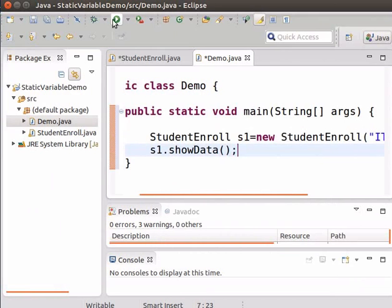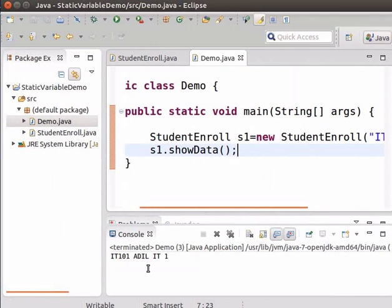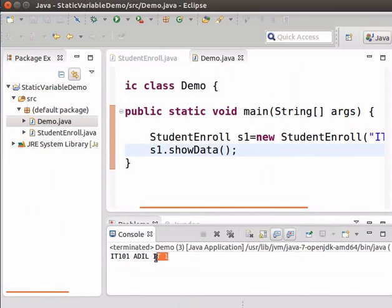Now run the demo program. We can see that the values of the instance variables corresponding to s1 get printed. Also note that the value of the number of student enrollments is 1. This is because we have created only one object.